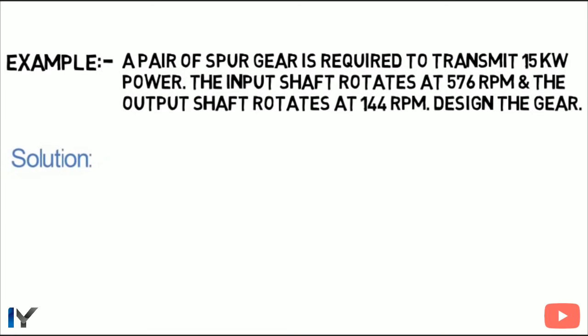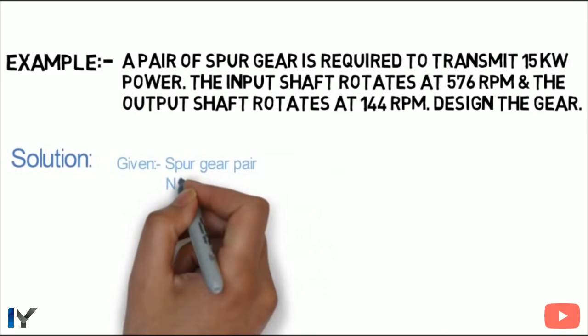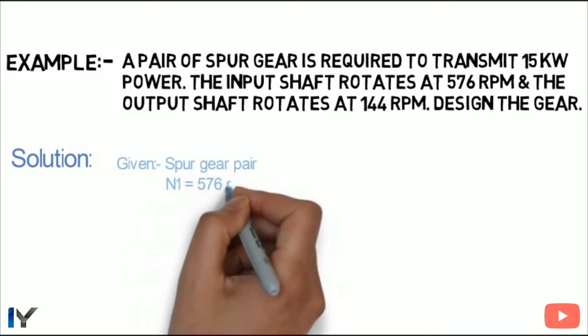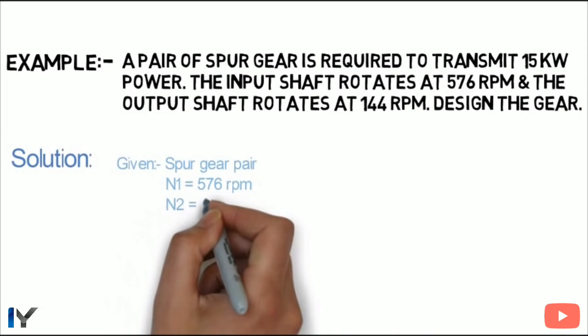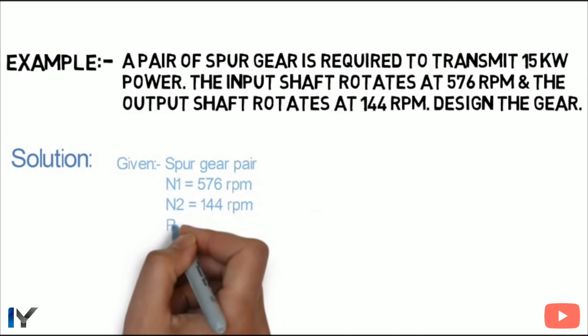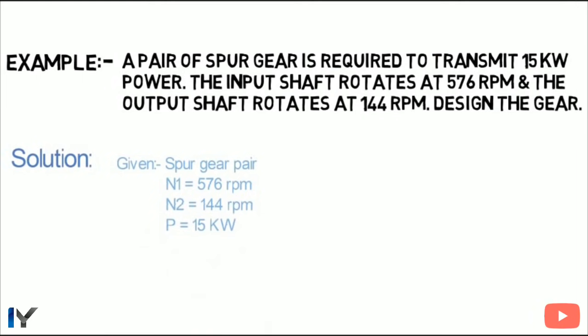Given data: spur gear pair. Input shaft N1 is 576 rpm, output shaft N2 is 144 rpm, and power is 15 kW.